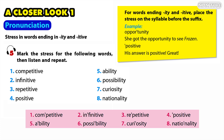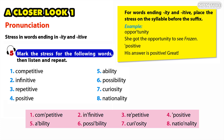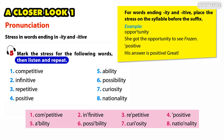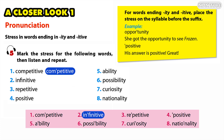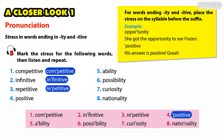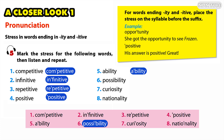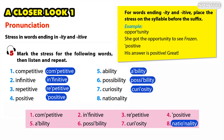Pronunciation, Activity 5: Mark the stress for the following words, then listen and repeat. One: competitive. Two: infinitive. Three: repetitive. Four: positive. Five: ability. Six: possibility. Seven: curiosity. Eight: nationality.